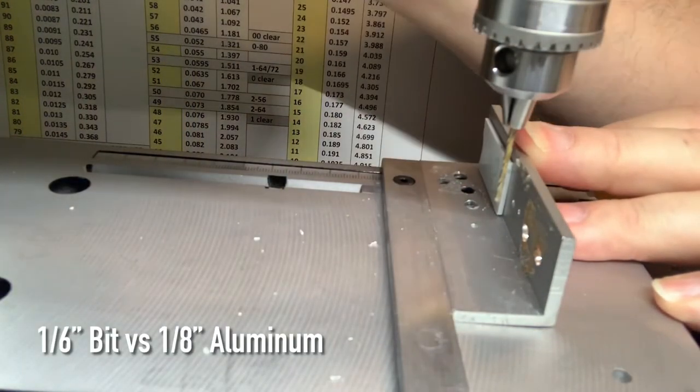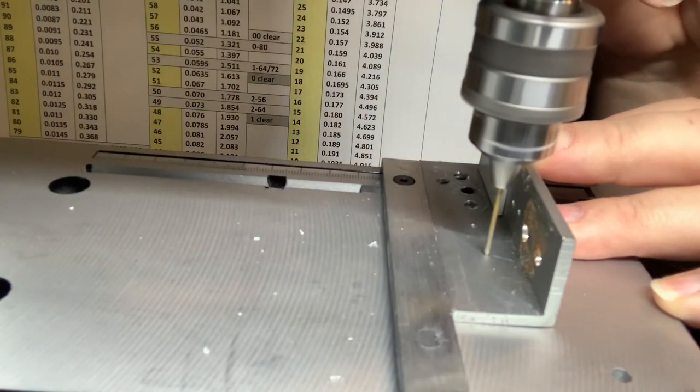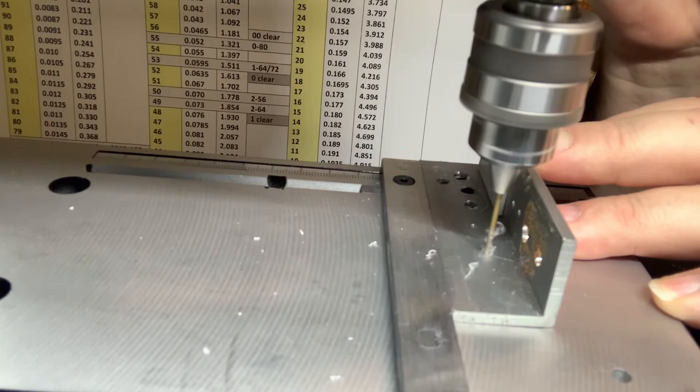I also wanted to try this out with some aluminum. This is a 1/16 inch drill bit drilling into a 1/8 inch aluminum angle.